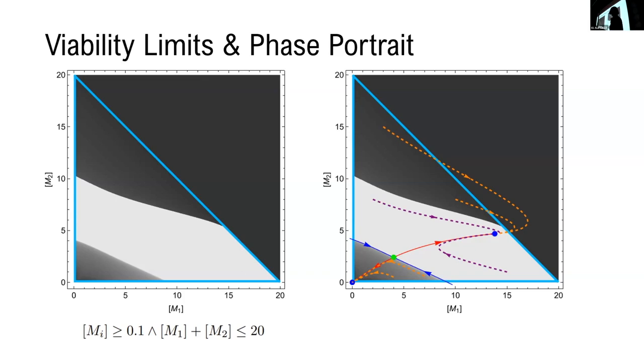But we're missing something, because we see that where the basin of attraction intersects with the viability region, we have both transiently viable and asymptotically viable outcomes. And in order to understand how we could have predicted this, we need to think a little bit more carefully about the types of things that can occur when we are actually on a viability limit.